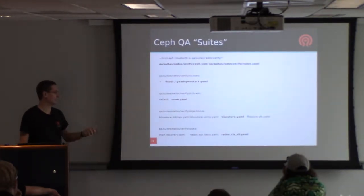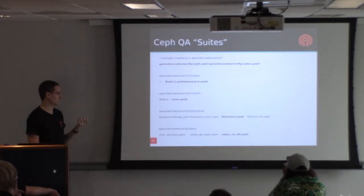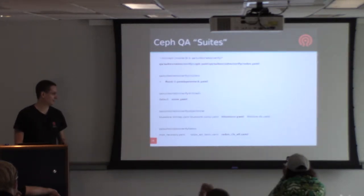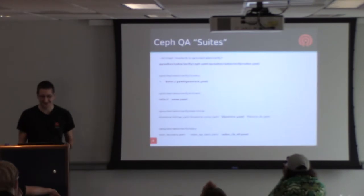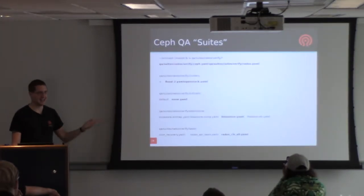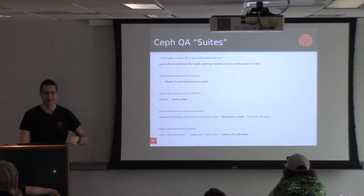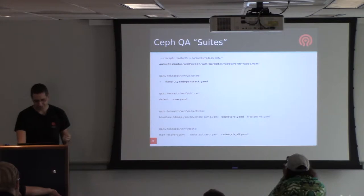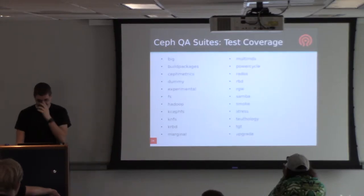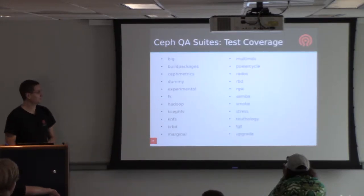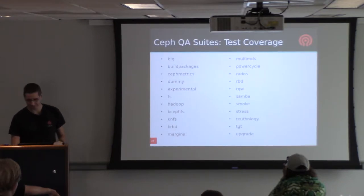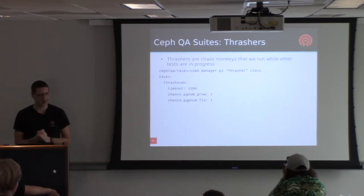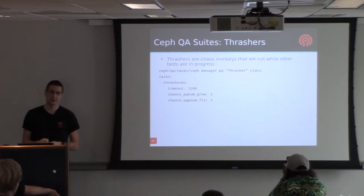So one test runs on XFS with the FileStore backend running API tests, the next runs the same things with monitor tests, then the next switches to BlueStore and iterates through all the tests again. It's a combinatorial explosion but very useful - when I add a new thing I just add a new task YAML fragment and it still tests against all the backends. We have a whole bunch of suites so coverage is pretty good.